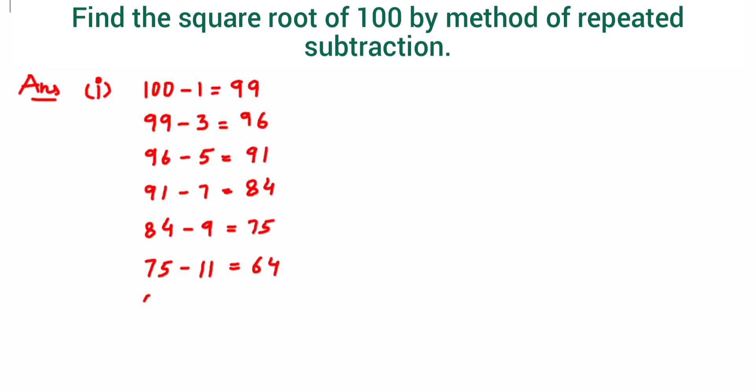Next 75 minus 11 is equal to 64. Again after 11 we have 13, so 64 minus 13 is going to give us 51. Again 51 minus 15, this will be equal to 36.